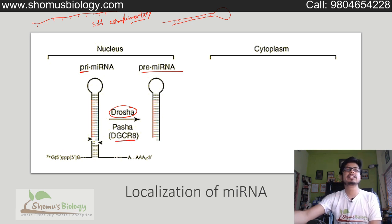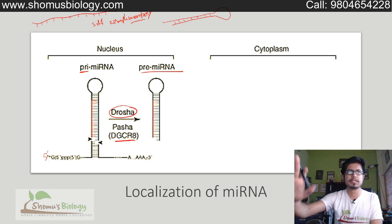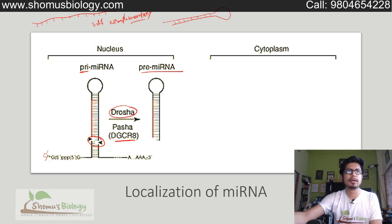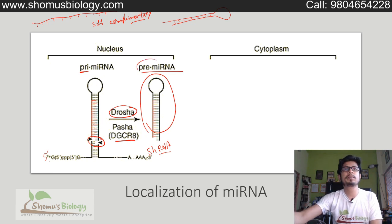An example of Drosha is DGCR8. Drosha enzyme is present inside the nucleus and its job is to cleave. You can see this is the full-length RNA — they have a complementary region, so they pair in the complementary region, not 100% complementary — about 60 to 70% complementary is enough to form this kind of structure. Drosha cleaves them from somewhere in the stem of the stem-loop structure. Drosha enzyme is an endonuclease that cleaves from the stem, and we now have a short hairpin RNA which we call pre-miRNA.